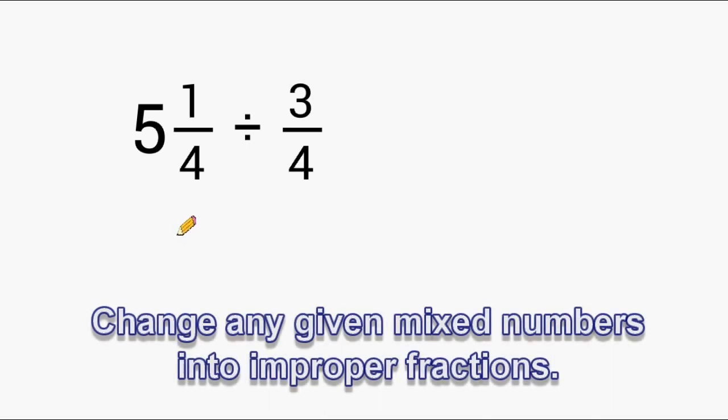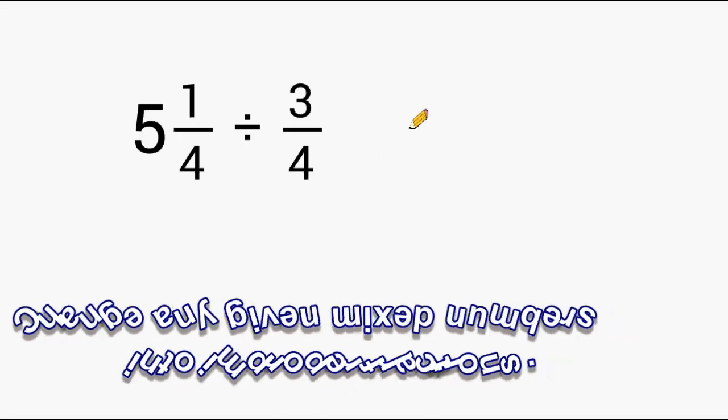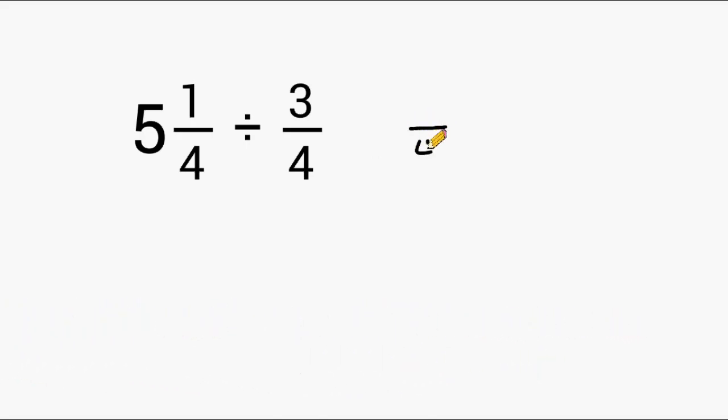The first thing we want to do is look at our denominator which is a 4 and we just simply rewrite that denominator. To get our numerator we take our denominator and multiply it by the whole number. The product of 4 and 5 is 20 and then we add the numerator to that product. So we have 20 plus one more which gives us a total of 21.